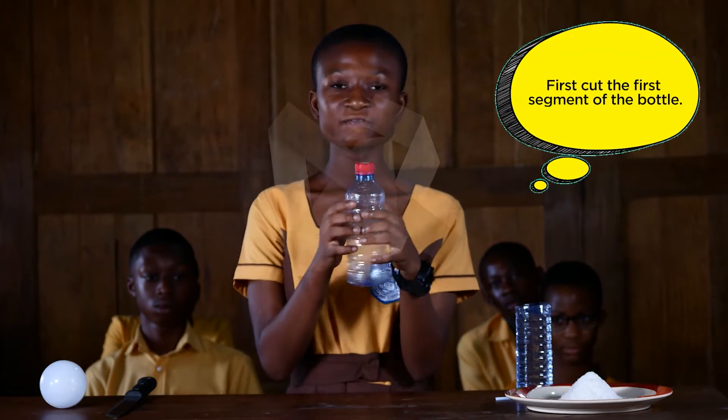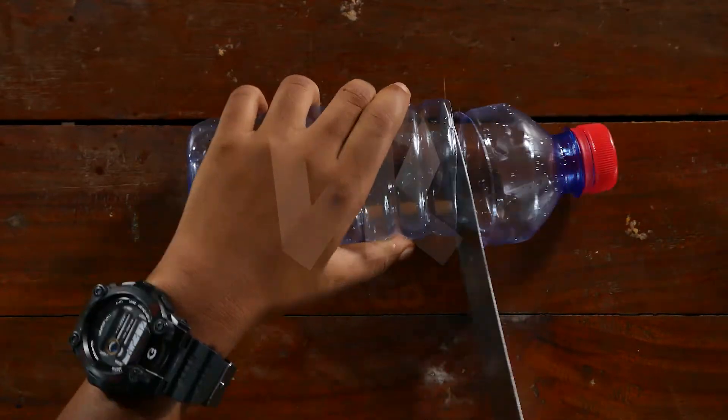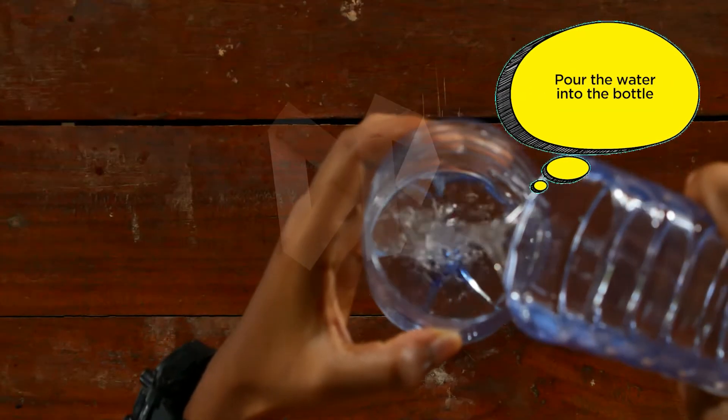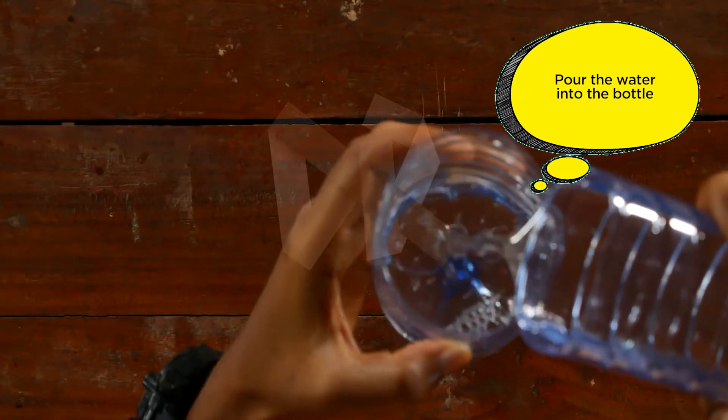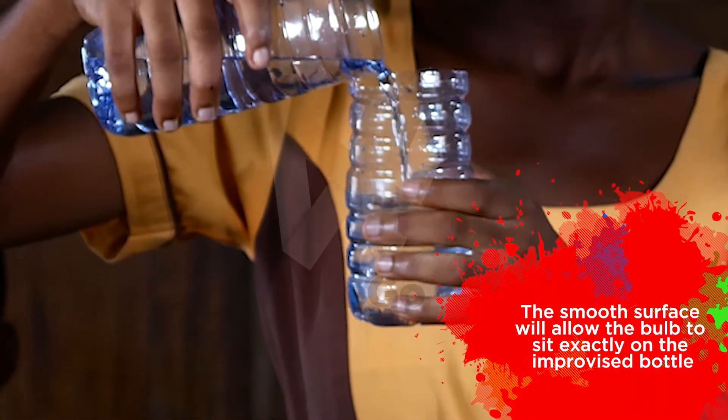First, cut the first segment of the bottle. Cut it carefully to get a smooth level. Pour the water into the bottle. The smooth surface will allow the bulb to sit exactly on the improvised bottle.